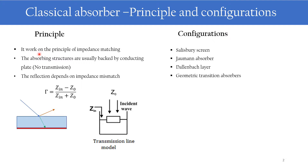The absorbers basically work on the principle of impedance matching. The main components of absorbers are absorbing structures which will be backed by a conducting plate. Because of this backing, when a wave is incident on it there won't be any transmission, because this metallic plate will reflect back what is incident on it. So there will be only reflection and the wave which is inside these absorbing structures.